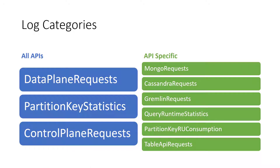Cosmos DB has a variety of log categories that we can monitor. Some of these are available across all APIs, such as data plane requests that capture requests executed to create, update, delete, or retrieve our data. Others are more API-specific, such as query runtime statistics, which detail query operations executed against a SQL API account. For more detail on these log categories, I've linked the article in the description.